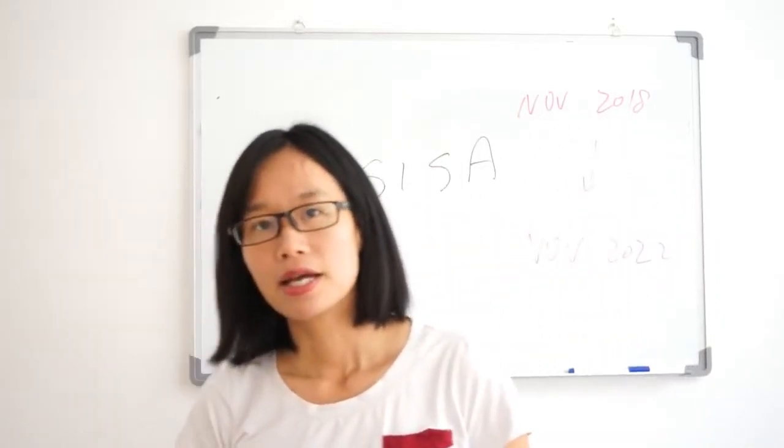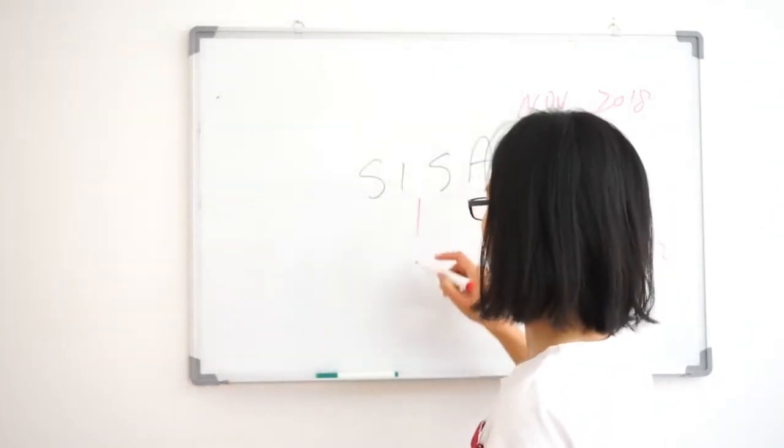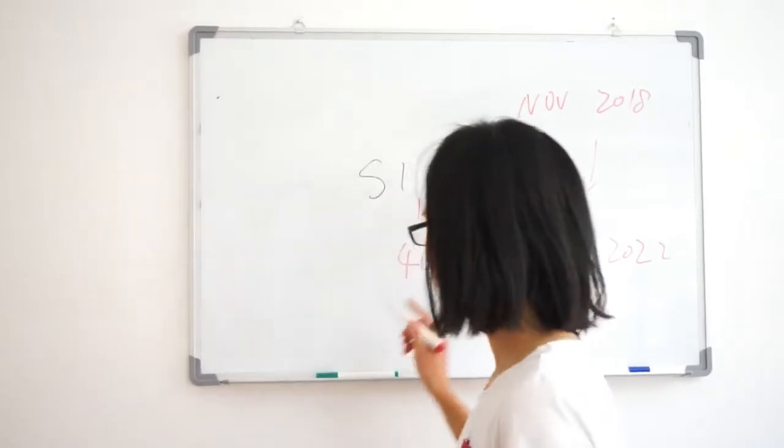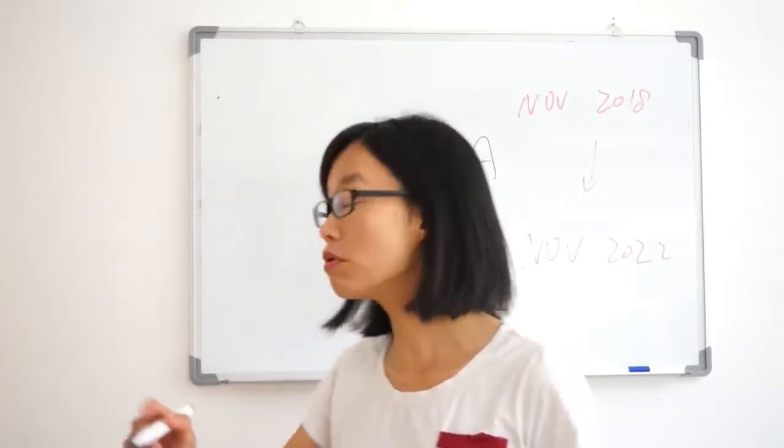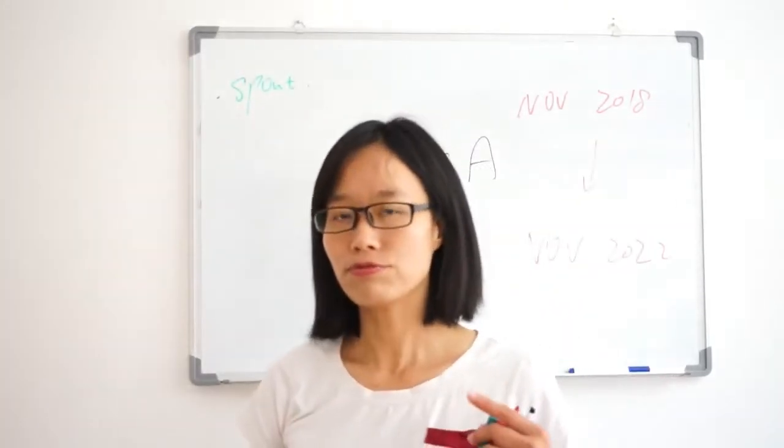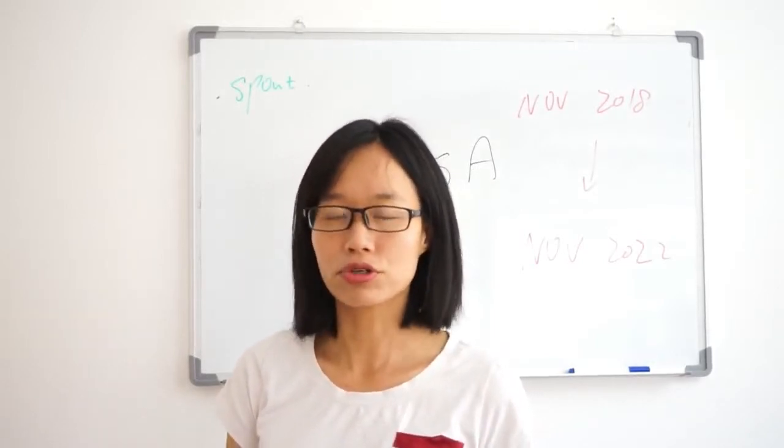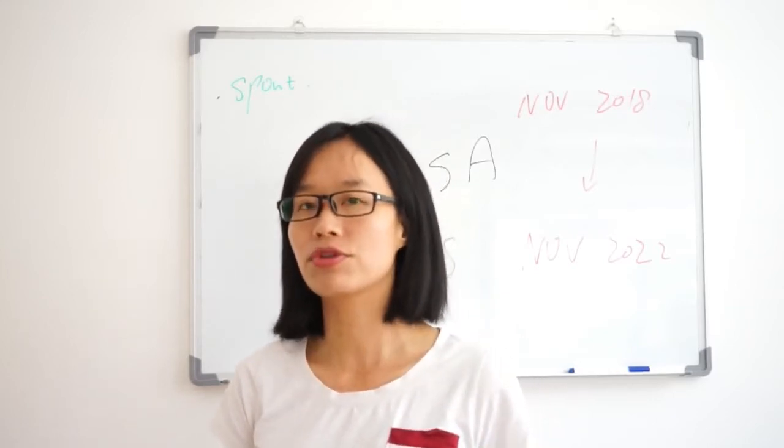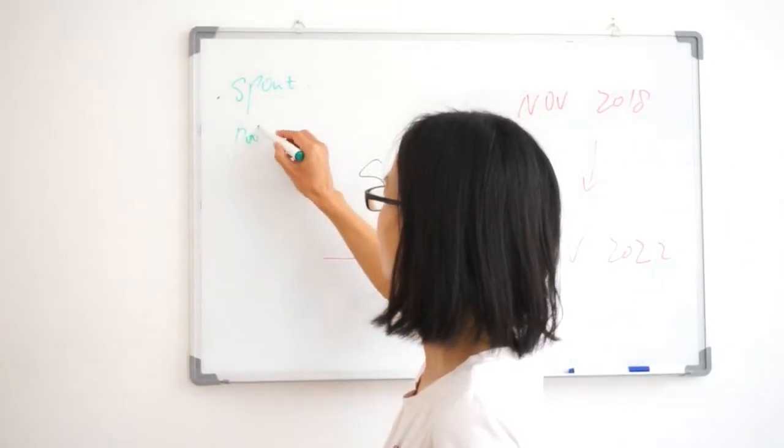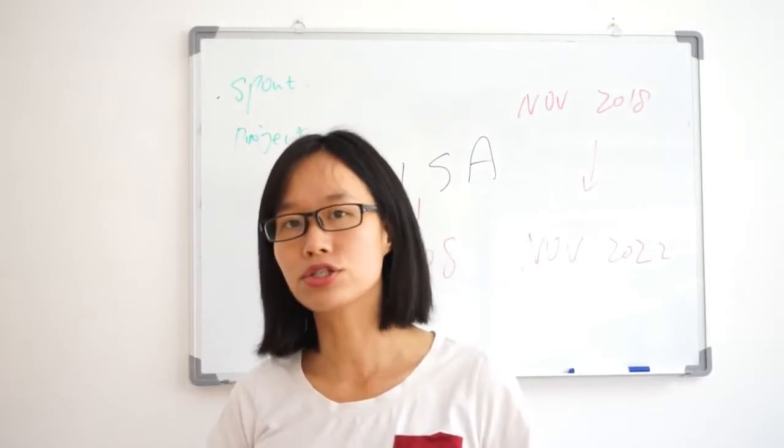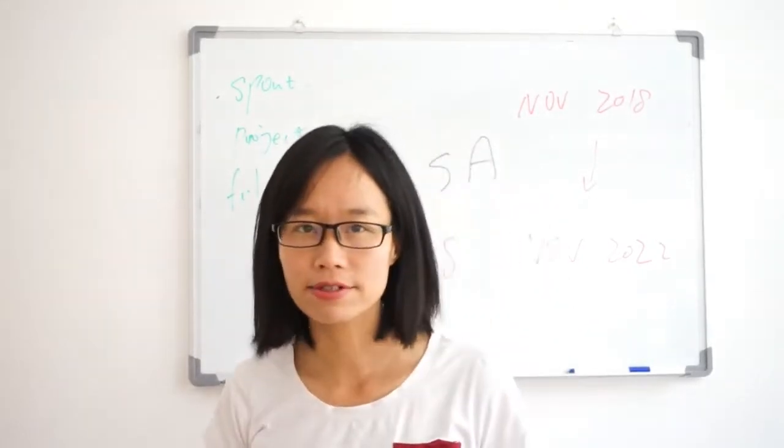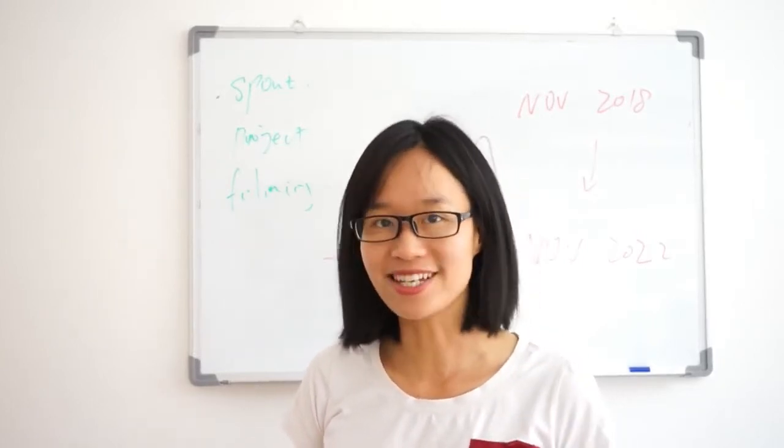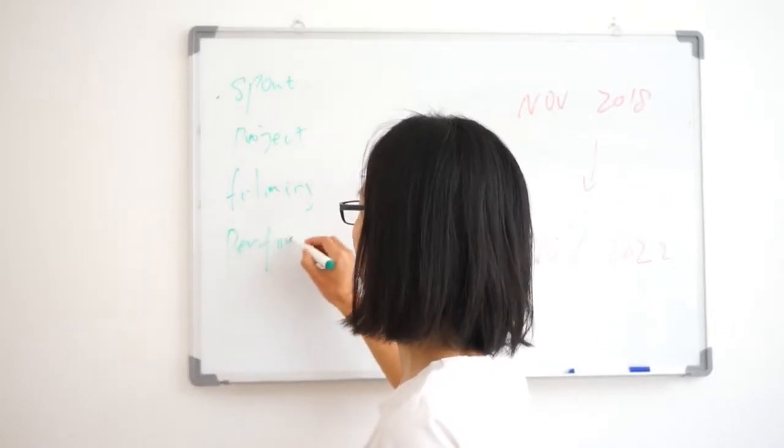This visa is under the sub stream of 408 subclass. We all understand 408 has many streams. For example, someone can come here to participate in Commonwealth Games, which is sport activity, or come here to do a specific project like construction that needs to be completed within six months. They may also come here to do entertainment activities like filming or performing.